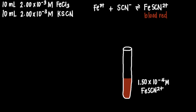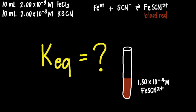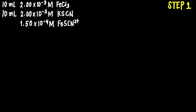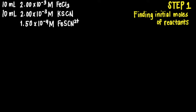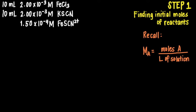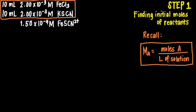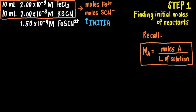How do we find the equilibrium constant value from this information? Our first step will involve finding the initial number of moles of each reactant. Recall that molarity is moles divided by liters of solution. Since we have the concentration in molarity and the volume of each reactant, we can use this formula to compute for the moles of the reactant. Take note: these are initial moles.